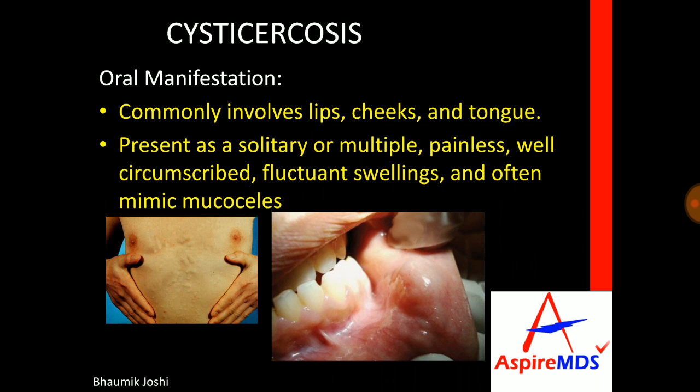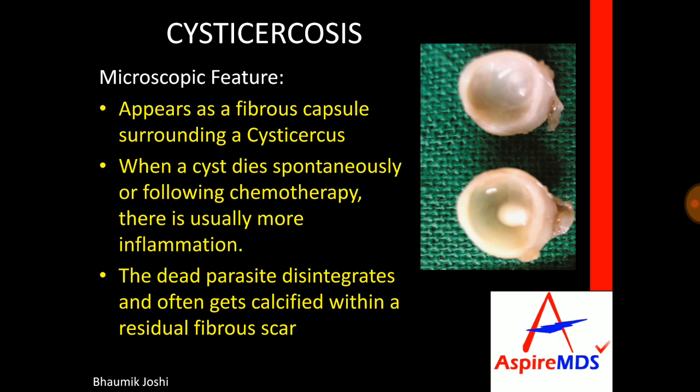Microscopically they appear as a fibrous capsule surrounding the cysticercus. When a cyst dies spontaneously or as a result of chemotherapy, there is more inflammation. And as time progresses, the dead parasite disintegrates and it often gets calcified within the residual fibrous scar.